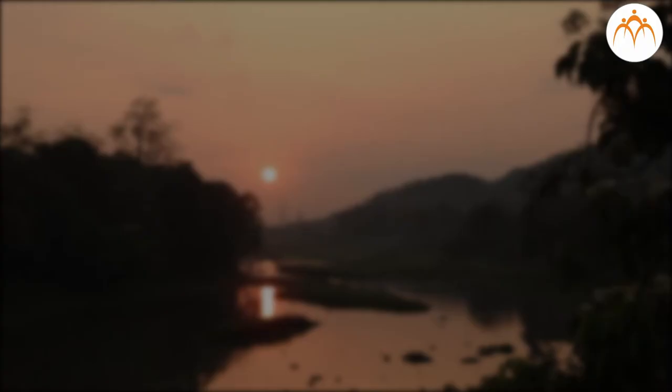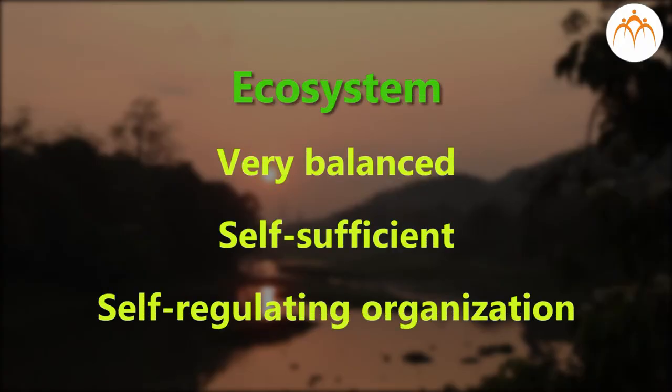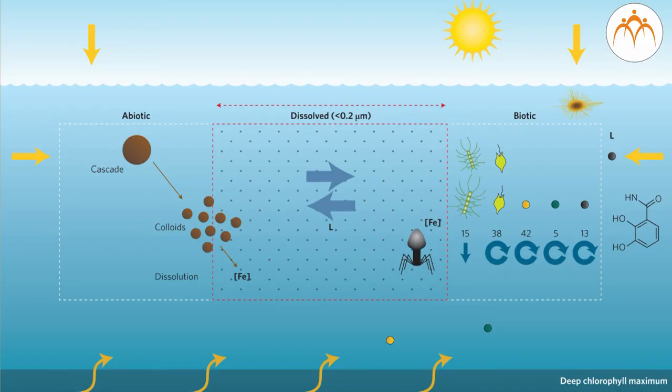Exactly! Hence, if you remember well, when I began explaining about ecosystem, I had used the phrase 'balanced, self-sufficient and self-regulating organization' to describe it. There is constant cyclical flow of materials and energy from abiotic components of ecosystem to biotic components of the ecosystem and vice versa. In other words, whatever the living organisms obtained from the environment during their growth and development is returned back to the environment after their death. Would this also mean that there is interdependence between abiotic and biotic components of an ecosystem? Absolutely!